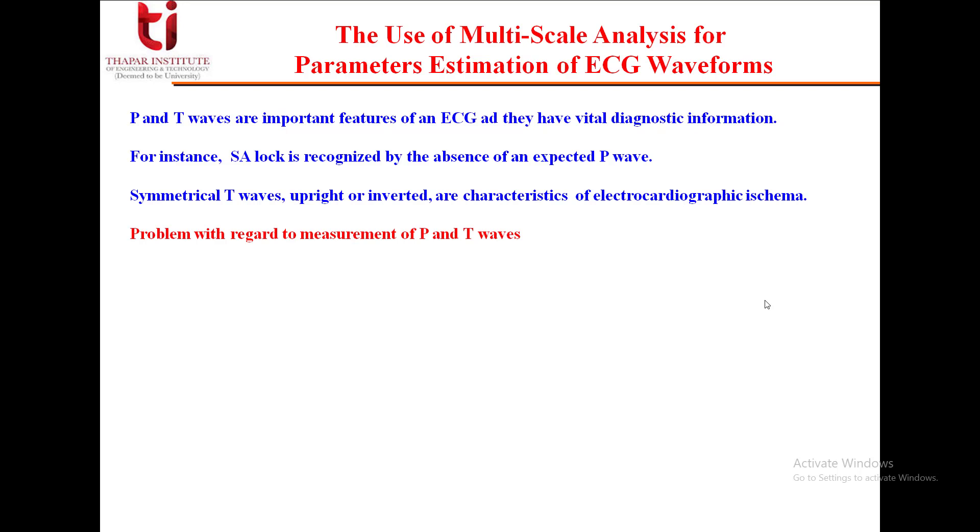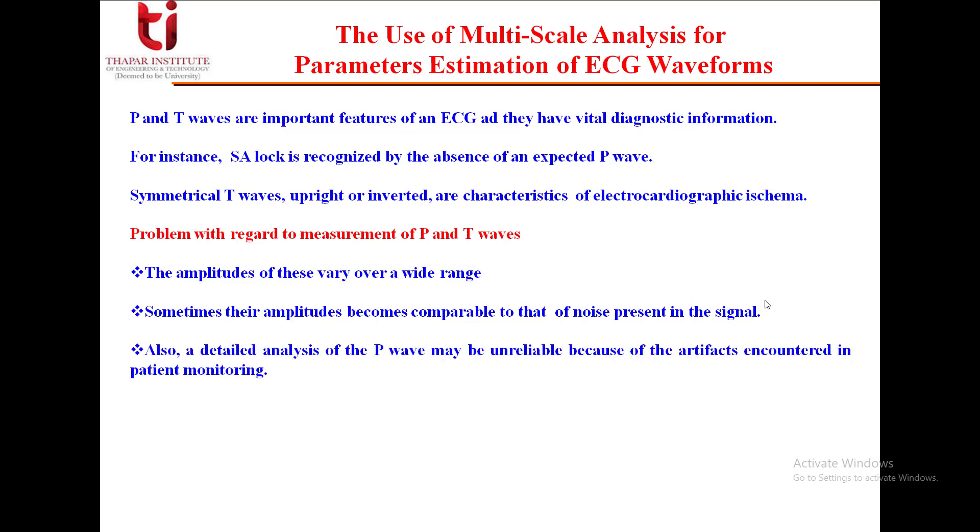What is the problem with regard to measurement of P and T waves? The amplitudes of these vary over a wide range. Sometimes even their amplitudes become comparable to that of noise present in the signal. Also, a detailed analysis of the P wave may be unreliable because of the artifacts encountered in patient monitoring.